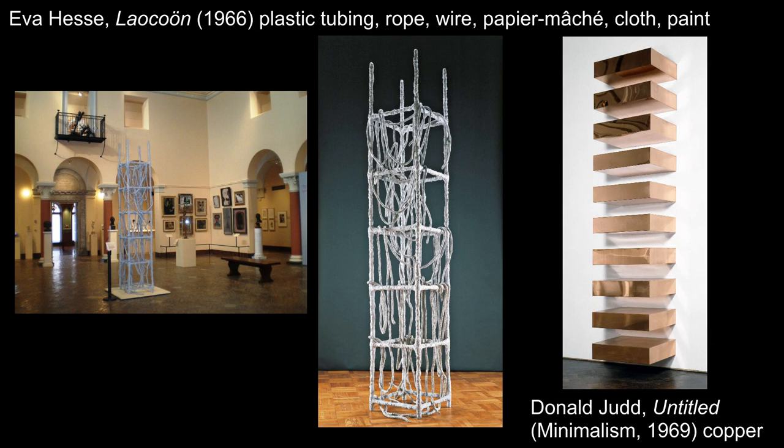In this example, she uses factory-made materials—plastic tubing, rope, and wire—similar to the industrial materials we saw minimalists using, but she also uses paper mache, paint, and cloth. She responds to the stacked grid forms that Donald Judd was making around the same time, creating a series of cubes extending vertically. But instead of leaving the edges hard and crisp like a minimalistic object, she softens it with vine-like forms that link the cubes and enliven the sculpture.